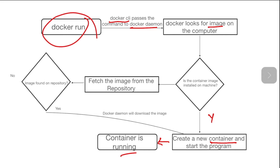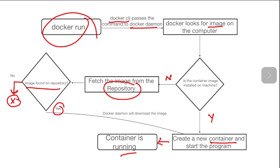Now let's take the scenario where the image is not existing on our machine. Then it will go and fetch the image from the Docker repository. The Docker repository can be seen as a store of images — it can be used to upload and fetch images. We can host our own repository or we can use the default repository of Docker, that is Docker Hub. The Docker Daemon will connect to the repository and will look for the particular image. If the image is not found on the repository, it will simply give an error. If the image exists on the repository, the Docker Daemon will go and download the image.